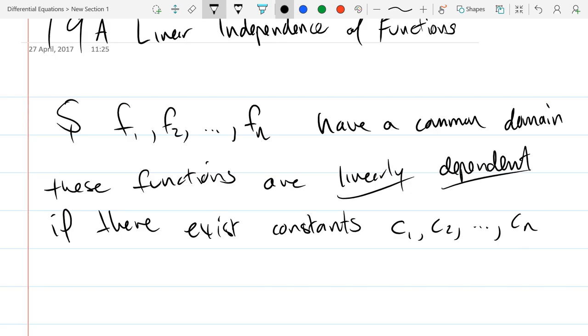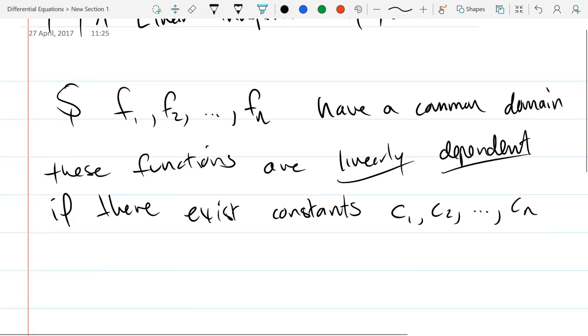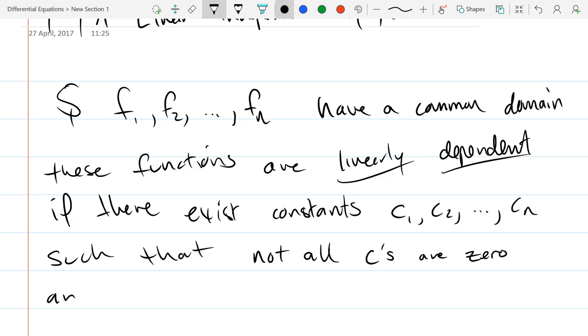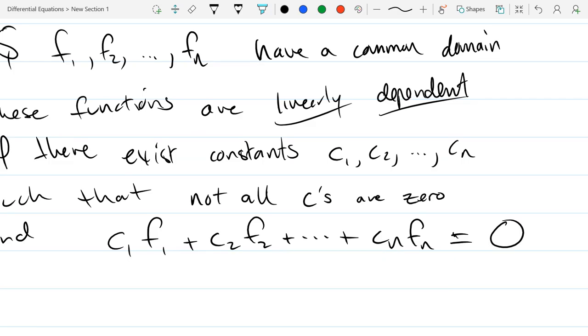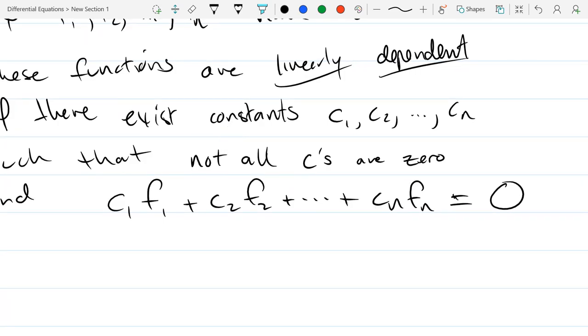So when we say common domain we mean all their domains are the exact same set. So whether it's an open interval, closed interval, union of some open and closed intervals, but all the functions have the same domain. They're linearly independent. Oh, and we're defining linear dependence, not independence. So erase the 'in' off the front of independence. So we're going for linearly dependent if there exists constants.